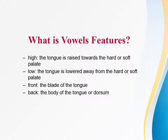Vowel features describe the height of the tongue in the oral cavity — high, mid, or low — the part of the tongue involved — front, central, or back — and the degree of tension in the tongue and lips, tense or lax, which is sometimes correlated with the position of the root of the tongue: advanced tongue root (ATR) or retracted tongue root (RTR), and the position of the lips: plus or minus round.